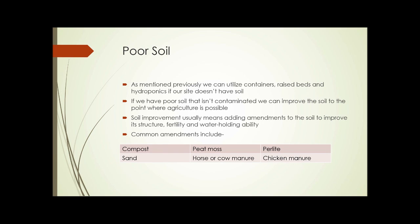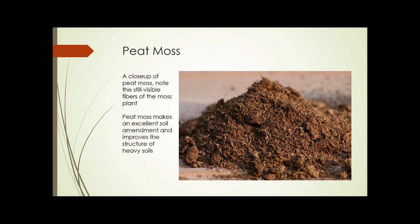Poor soil. We can utilize containers, raised beds, and hydroponics if our site doesn't have good soil. However, if we have poor soil that isn't contaminated, we can improve it to the point where agriculture is possible. Soil improvement usually means adding amendments to the soil to improve its structure, fertility, and water-holding ability. The most common amendments include compost, peat moss, perlite, sand, horse or cow manure, or chicken manure. This close-up picture of peat moss shows the visible fibers of the moss plant; it makes an excellent soil amendment and improves the structure of heavy clay soils.